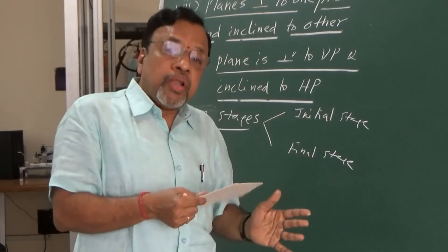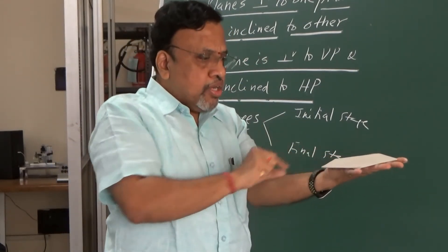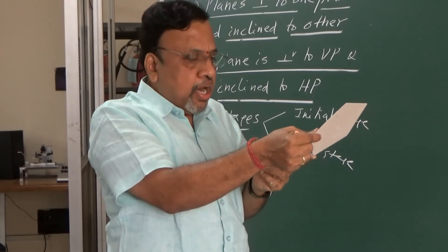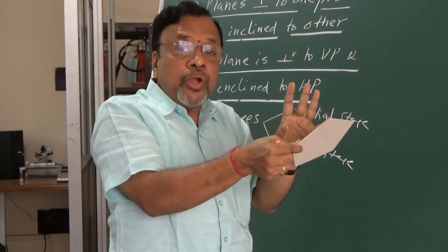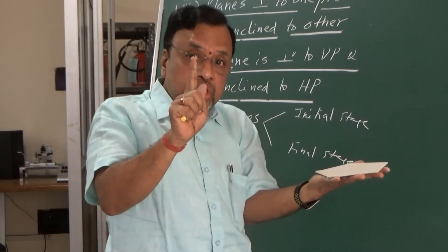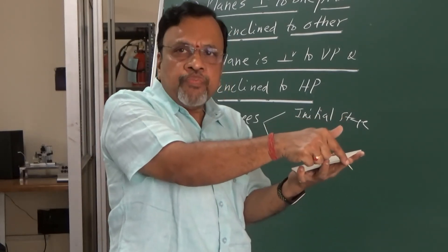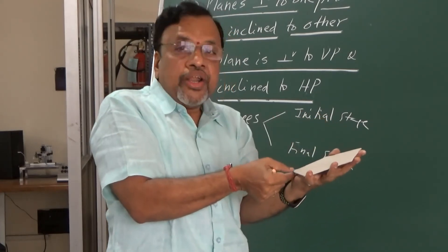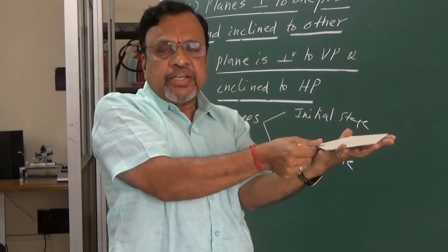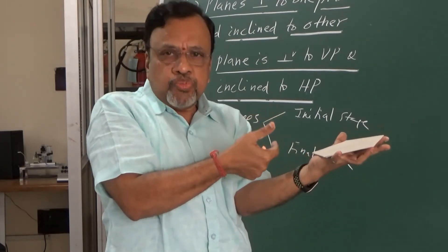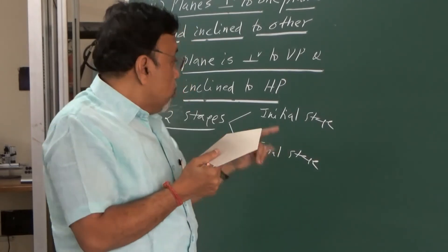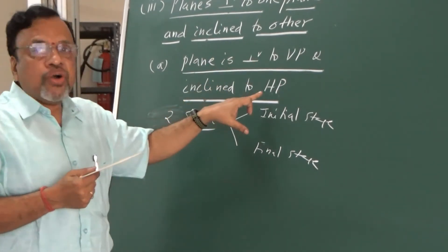If there is no such statement, different students will orient the lamina in different ways, and we will get many different solutions. I want students to arrive at a unique solution. The unique solution comes from the problem statement specifying whether the lamina rests on HP, or one side is parallel to HP, or it rests on a corner. For instance, the problem may say a pentagonal lamina of 30 mm side is resting on a corner on HP, inclined at 30 degrees to HP — draw the projections.